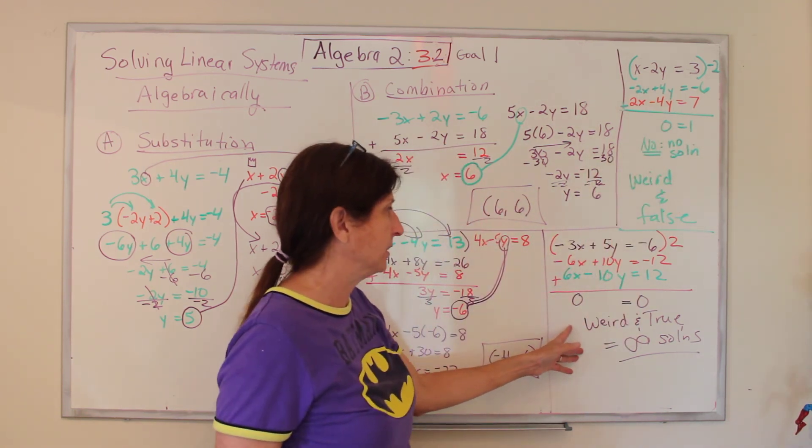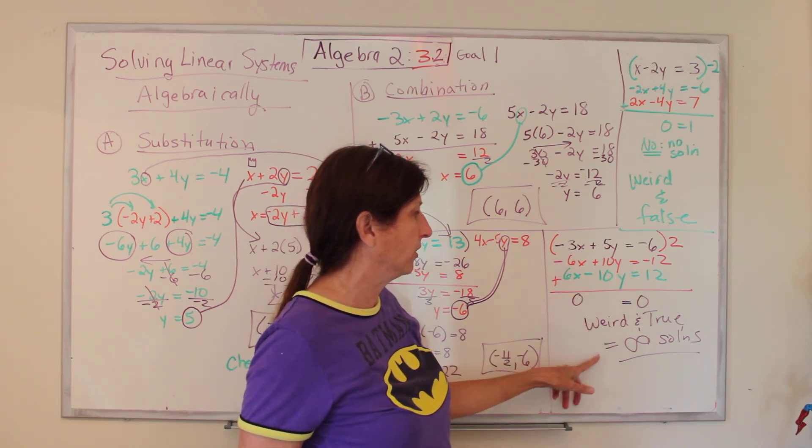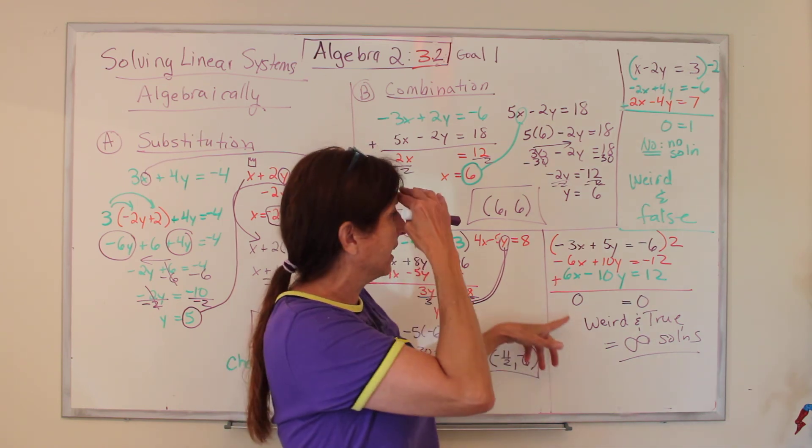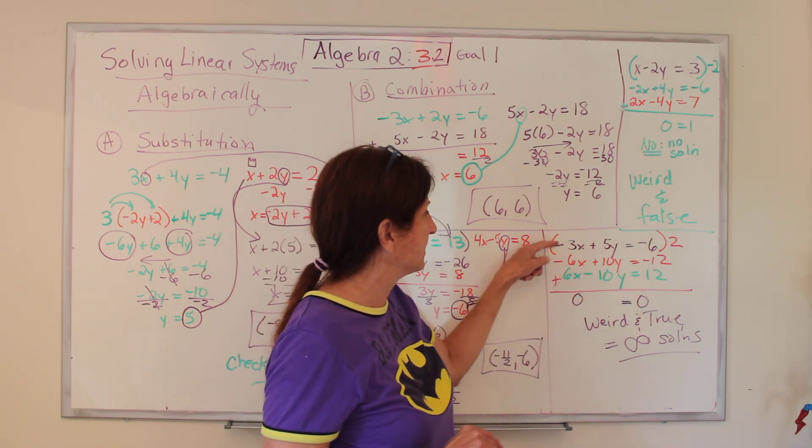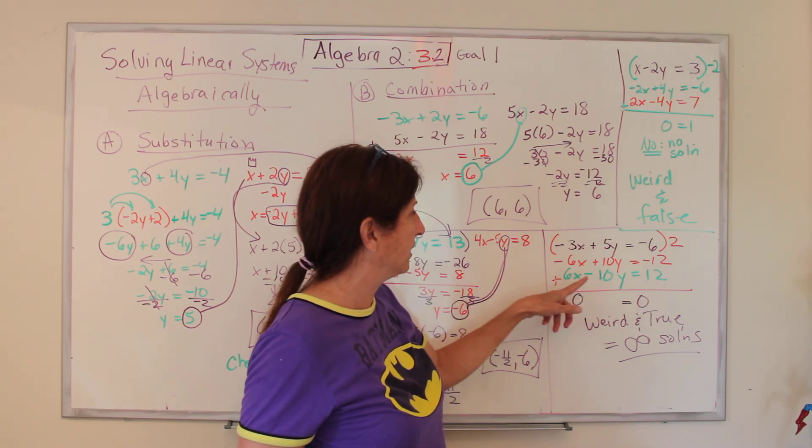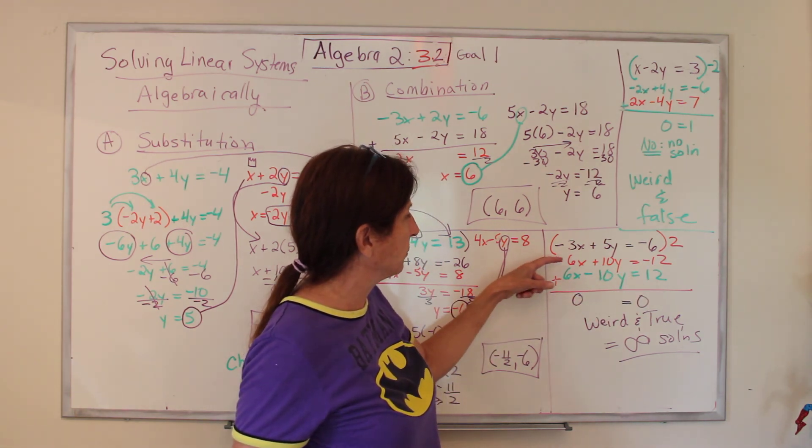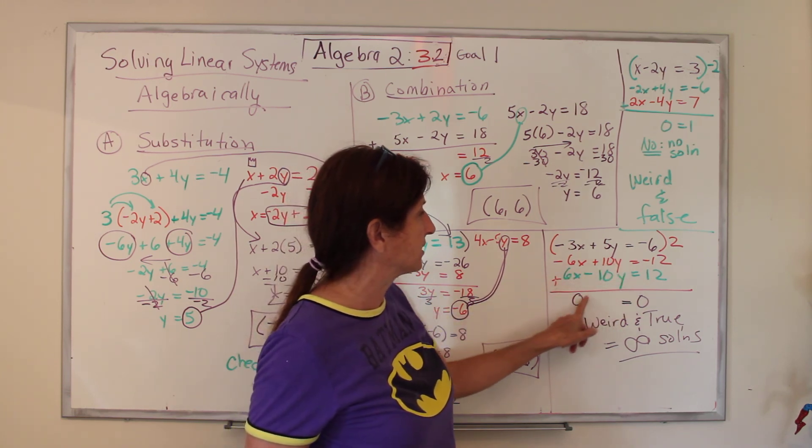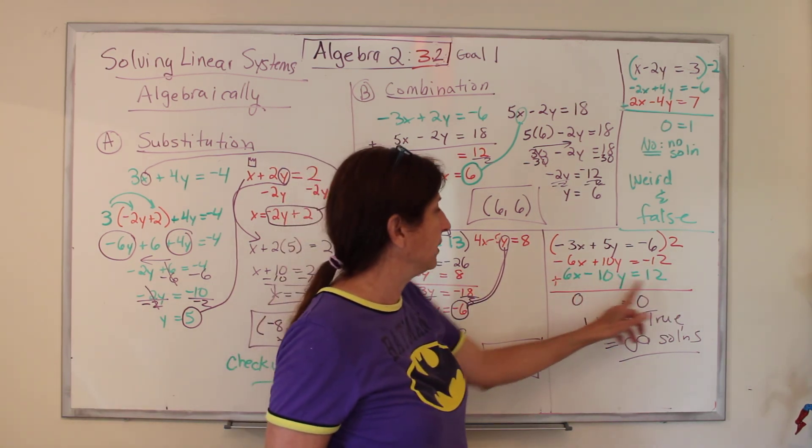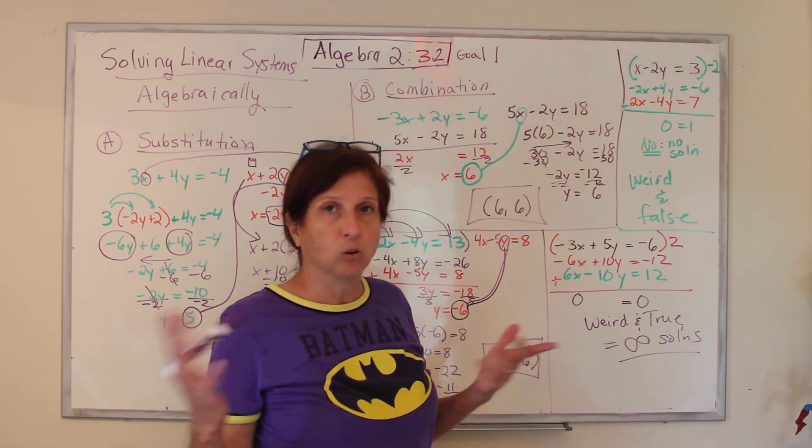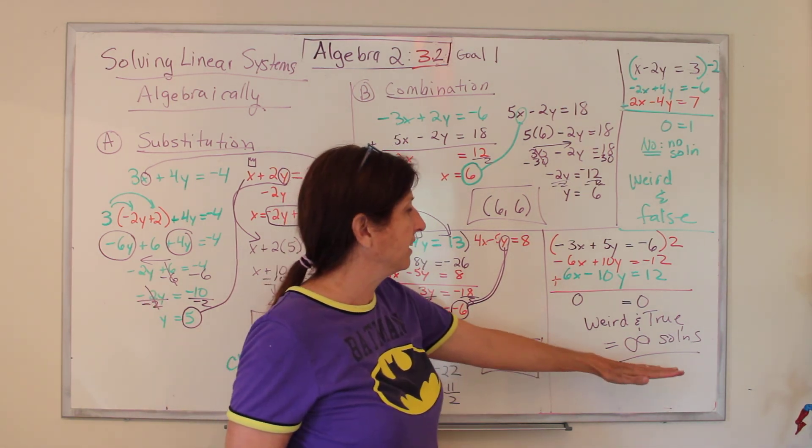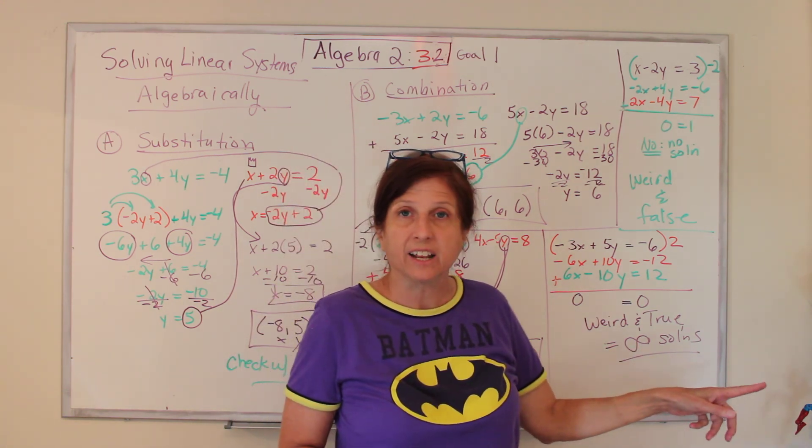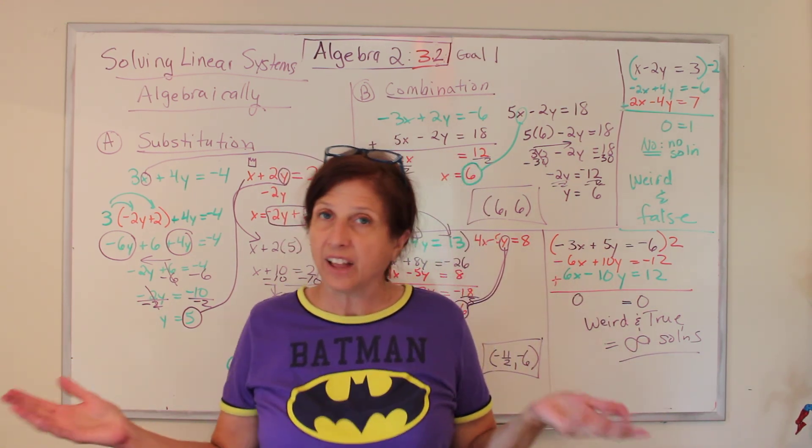The other thing that happens is you can suddenly get something that's weird and true. And the answer is infinity solutions. They're the same line. So here are my two equations. This one and this one. I multiply that one by 2 so that I had equal and opposite. But if you notice, the X's go away, the Y's go away, and the 12's go away. And you end up with 0 equals 0. Weird and true. Then it is infinite number of solutions. And you get to use the sideways 8, the infinity symbol. And that's always fun.